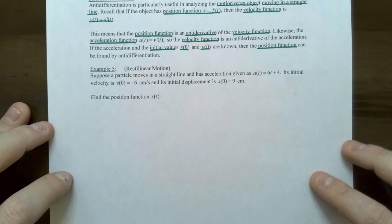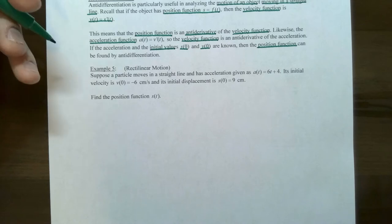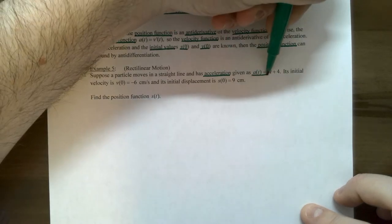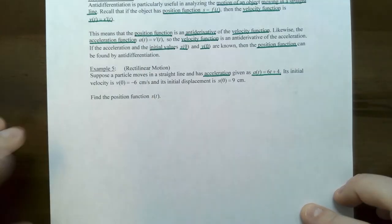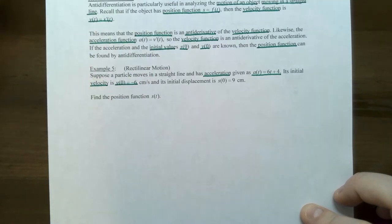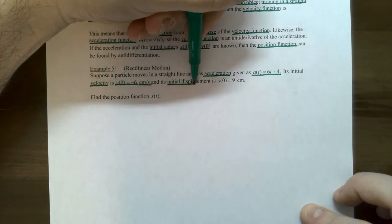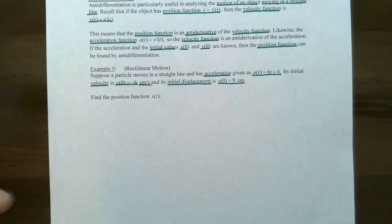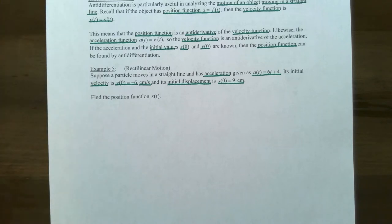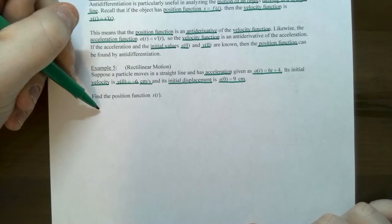Let's try Example 5: Rectilinear Motion. Suppose a particle moves in a straight line with acceleration a(t) = 6t + 4, initial velocity v(0) = −6 centimeters per second, and initial displacement s(0) = 9 centimeters. The question asks us to find the position function s(t). Let's go through this in steps.